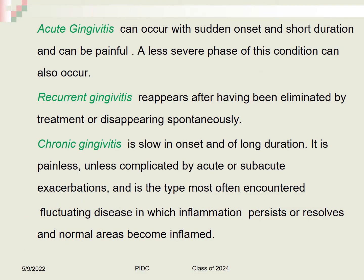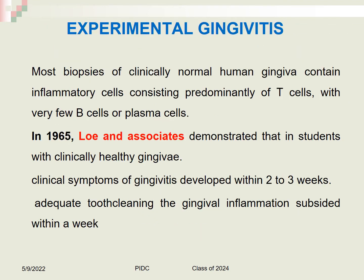According to the 1999 classification, gingivitis is also divided into acute gingivitis (sudden onset, short duration, can be painful), recurrent gingivitis (reappears after treatment and disappears spontaneously), chronic gingivitis (slow onset, painless unless complicated by acute exacerbations, most commonly encountered), and fluctuating gingivitis, in which inflammation persists or resolves and normal areas become inflamed.